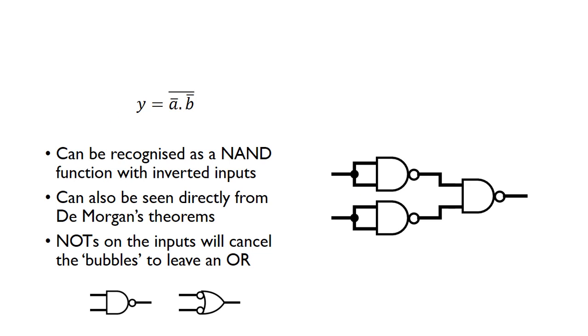And again, from this, we can see this is another NAND function. We recognize it as a NAND function, but also that the inputs are inverted. So here we've got NOT A, NAND, NOT B. So that's just the NAND function with two inverters on the input.